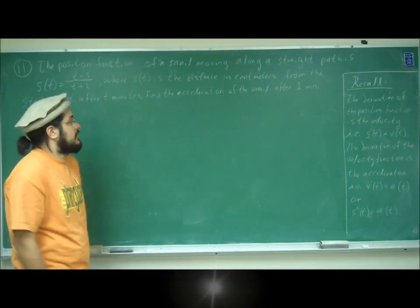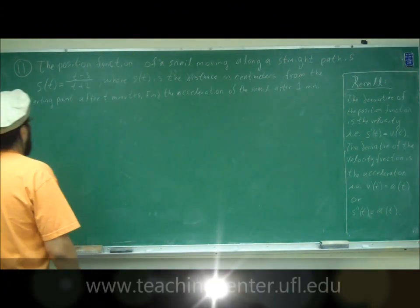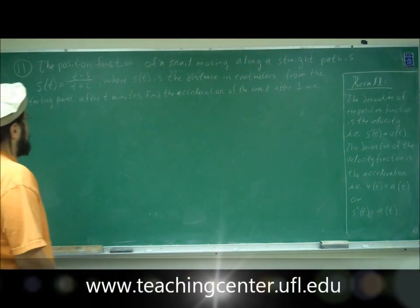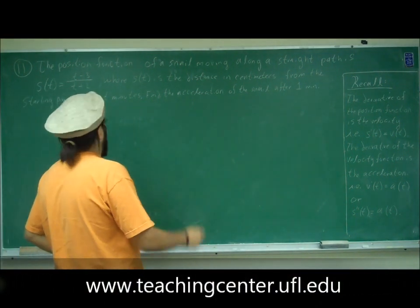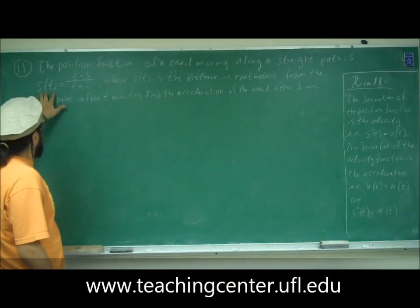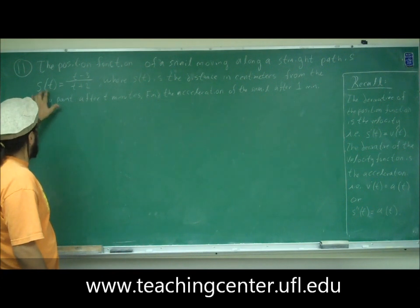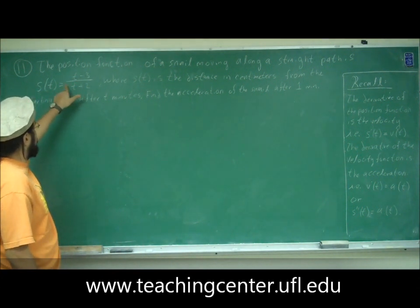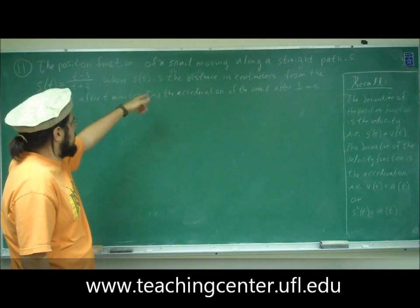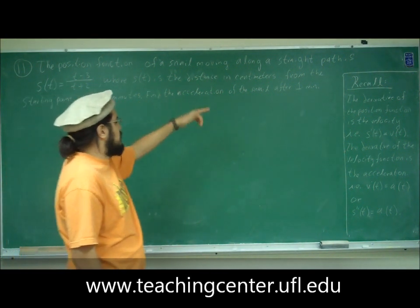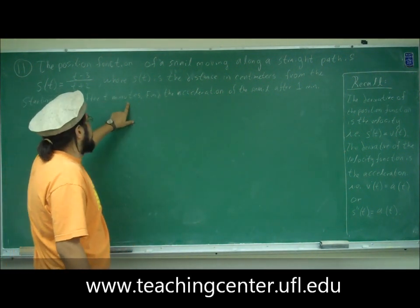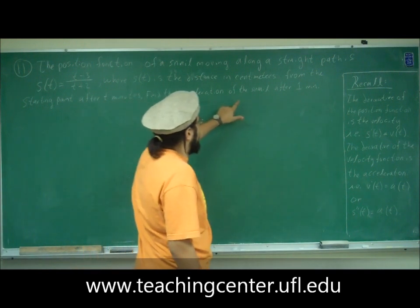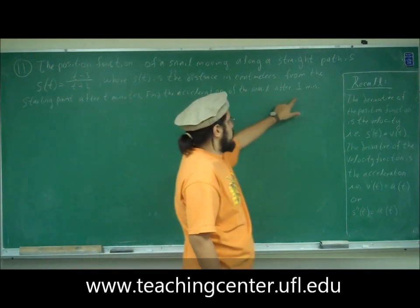So this is problem 11. Problem 11 reads: the position function of a snail moving along a straight path is given by this function. s(t), for position, is (t minus 3) divided by (t plus 2), where s(t) is the distance in centimeters from the starting point after t minutes. Find the acceleration of the snail after one minute.